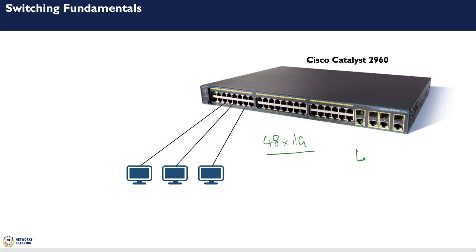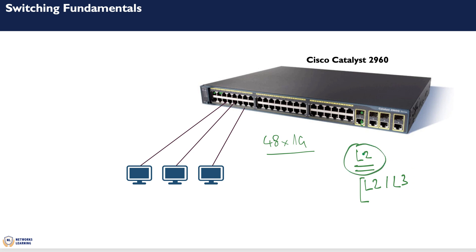Switches can typically be layer 2 only — traditional switches operate at layer 2. You will also have multi-layer switches that operate at both layer 2 and layer 3. Multi-layer switches are capable of routing packets, and you can configure routing on them as you would on a router. In this session, we will focus only on the layer 2 aspect of switches.